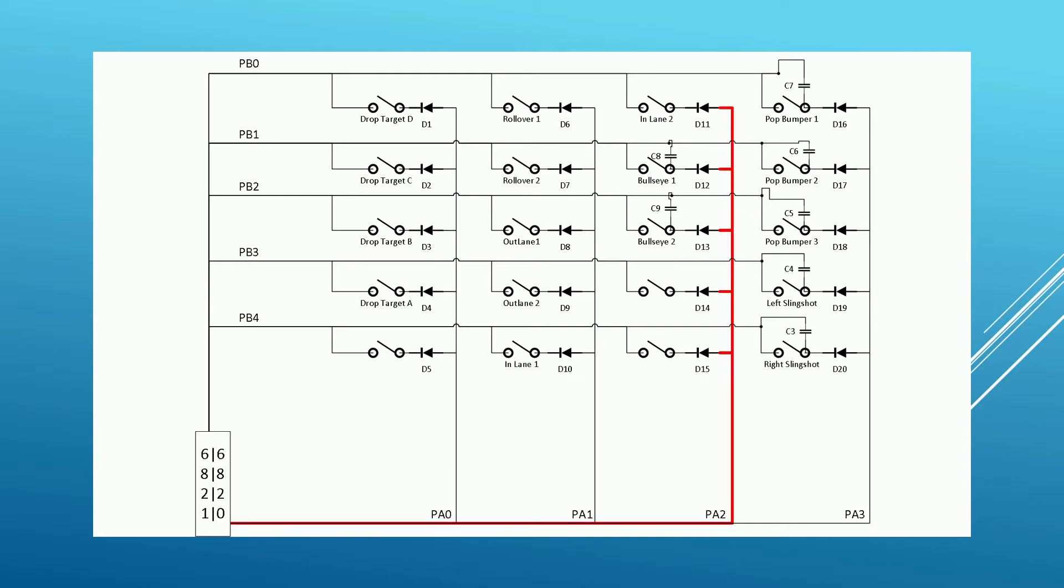In operation, the way this works is the system sends out a pulse on each column in turn. At the same time, it is listening on the rows to see if any switches are closed. In this way, it can determine which switch is closed by looking at the intersection of the row and the column. In real life, this scanning is happening hundreds to thousands of times per second.